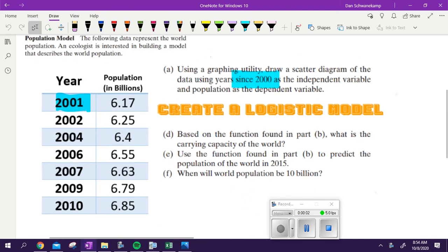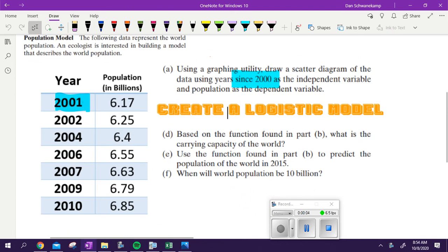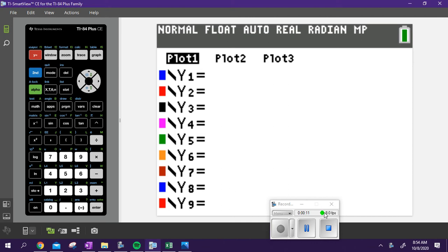Alright, so this is the world population since 2001. Using a graphing utility, we're drawing a scatter diagram of that data since 2000. First thing I did was I broke out my calculator.